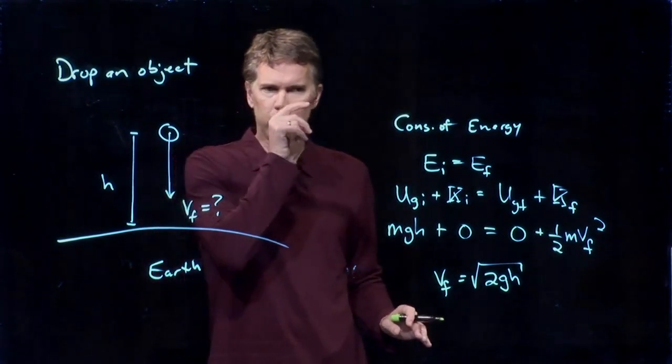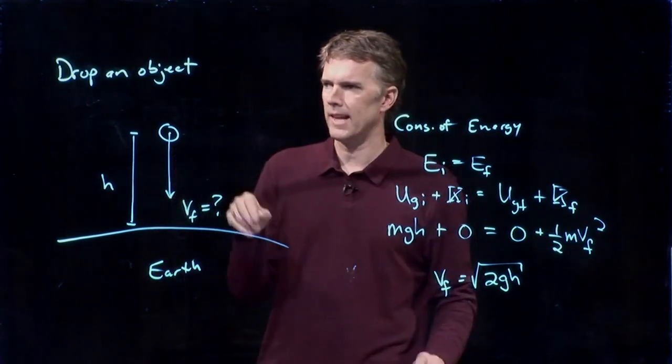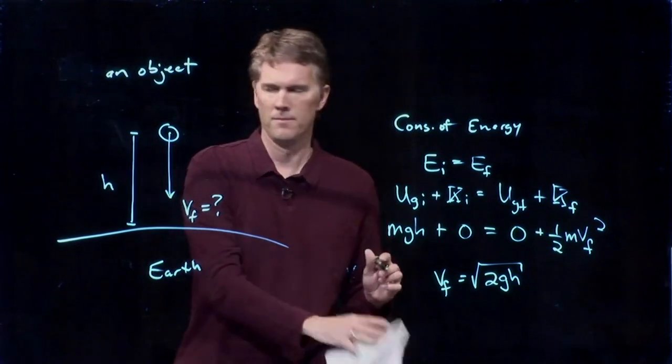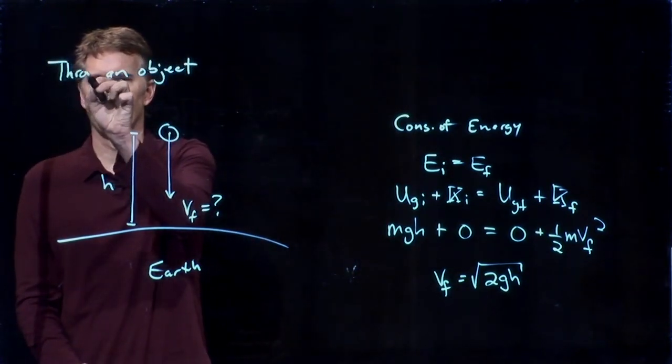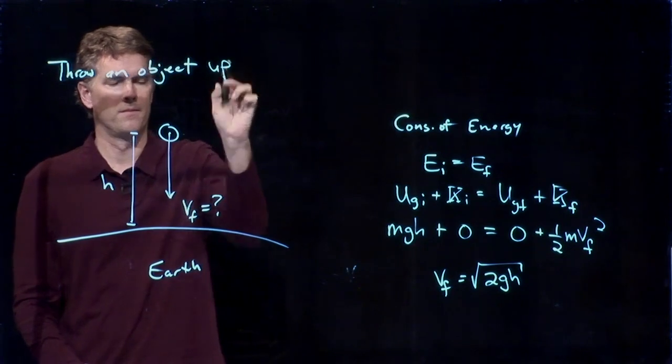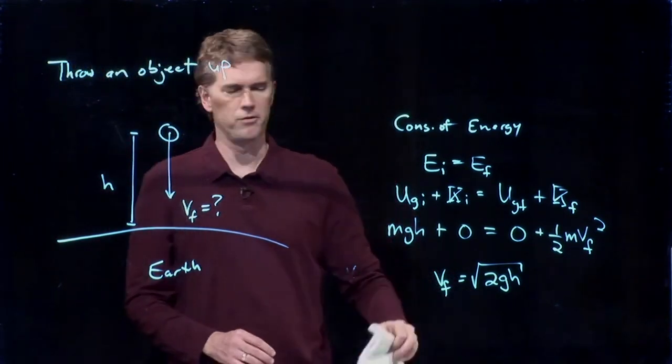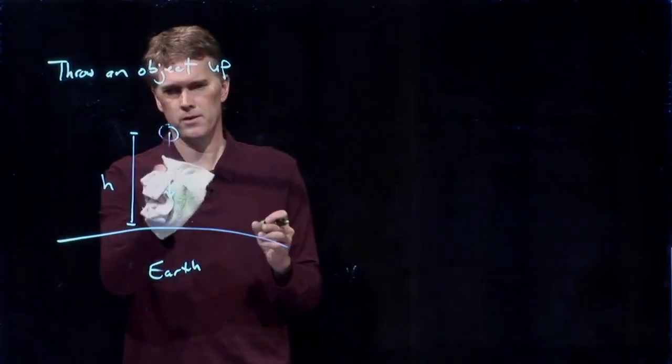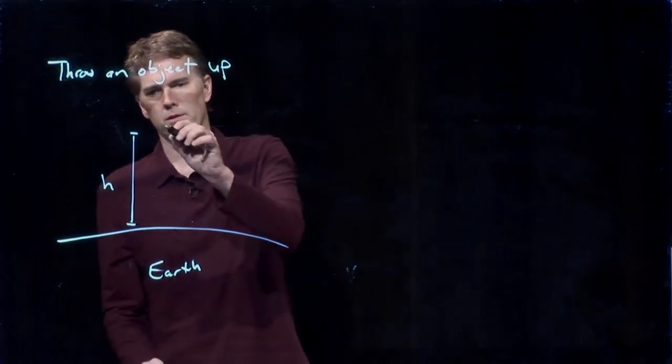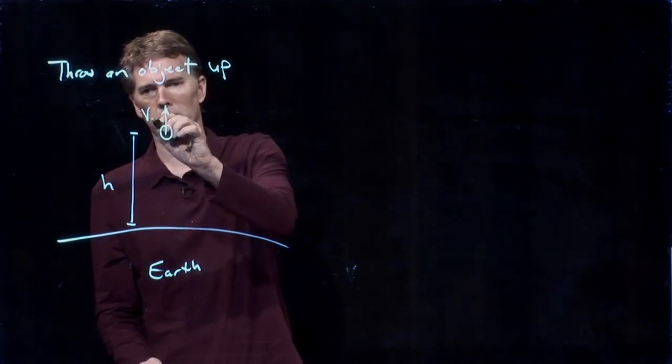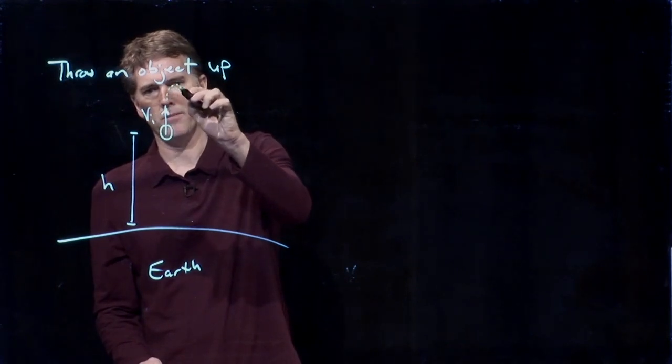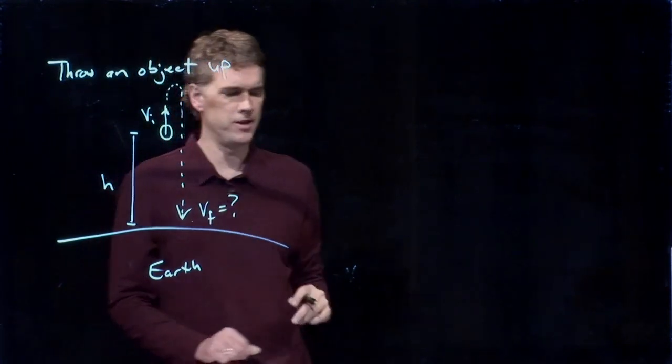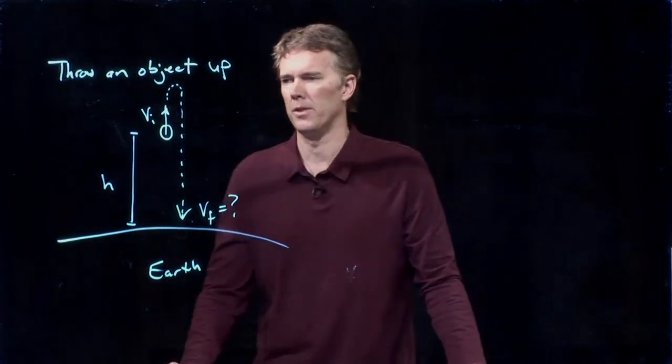But let's take this problem now and let's slightly modify it. Let's throw the object up and let's calculate what the Vf is when it comes back down. So instead of dropping this object straight down, we're going to throw it up at initial speed Vi. It's going to go up for a little bit and then it's going to come back down and it's going to hit the ground at Vf. Let's see if we can figure out what that Vf is.